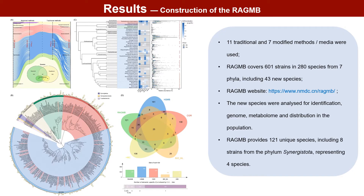we isolated 3,200 strains from fecal samples of 20 RA patients using 11 traditional and 7 modified methods or media. After classification and screening, we obtained 601 non-redundant bacterial strains representing 280 species from 7 phyla, including 43 novel species.